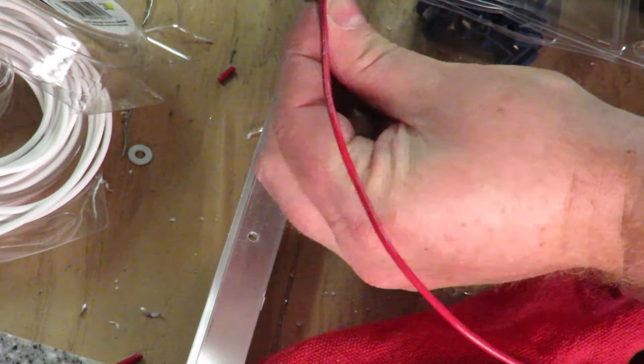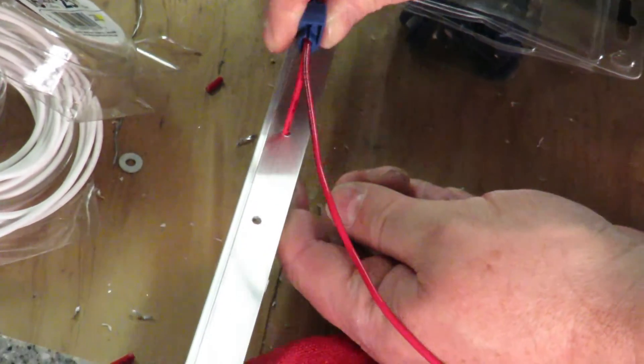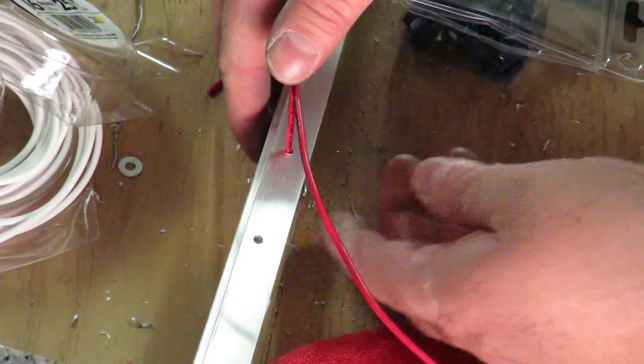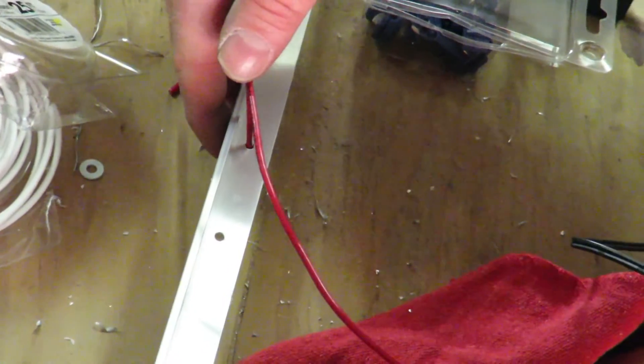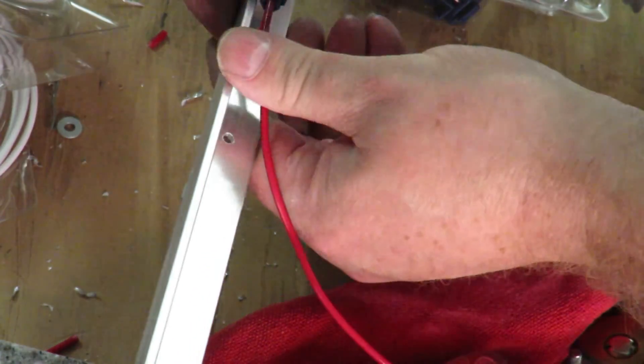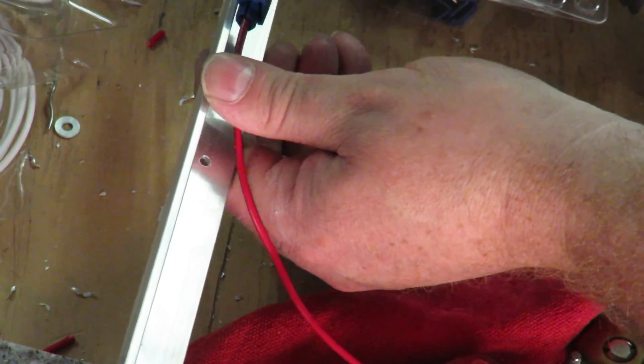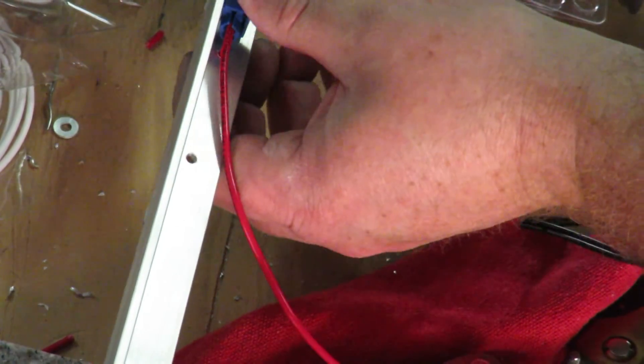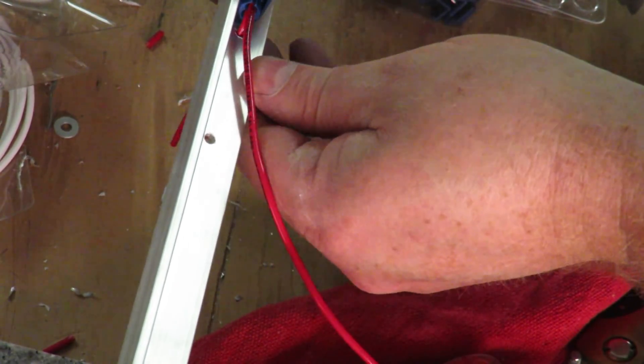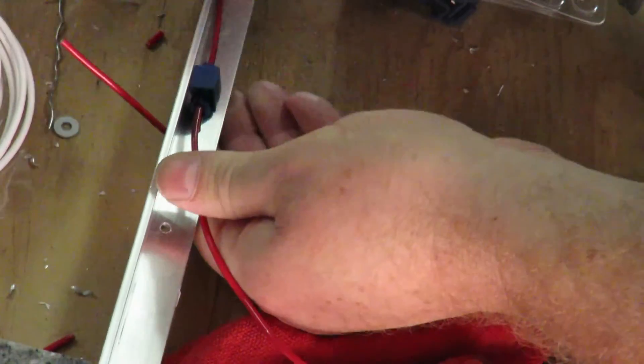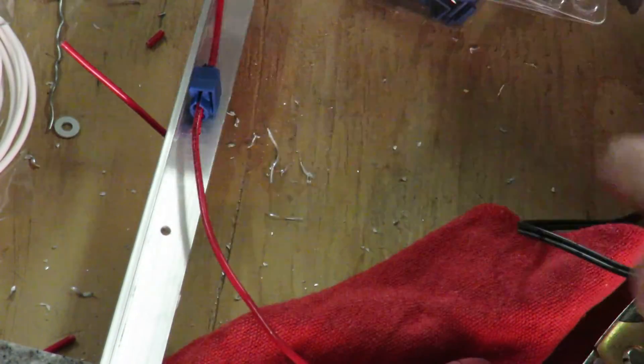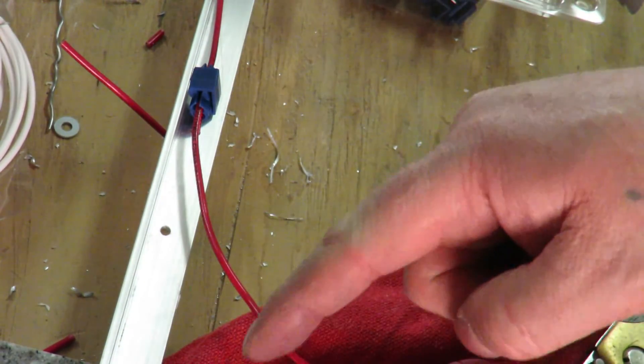Then you can take your newly spliced wire, put it through the hole that you want, which in my case is right there. What I've been doing is just folding them over until we get ready to go ahead and do it. Now we're going to move on to the next one.